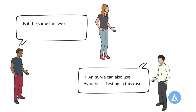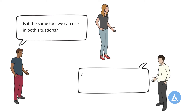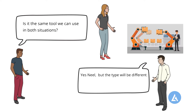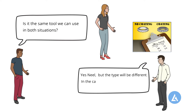Is it the same tool we can use in both situations? Yes Neil, but the type will be different. For example, in your case of comparing machines, we need to use one-way ANOVA, a type of hypothesis testing. In the case of Anita's situation, we need to use the paired t-test, another type of hypothesis testing.